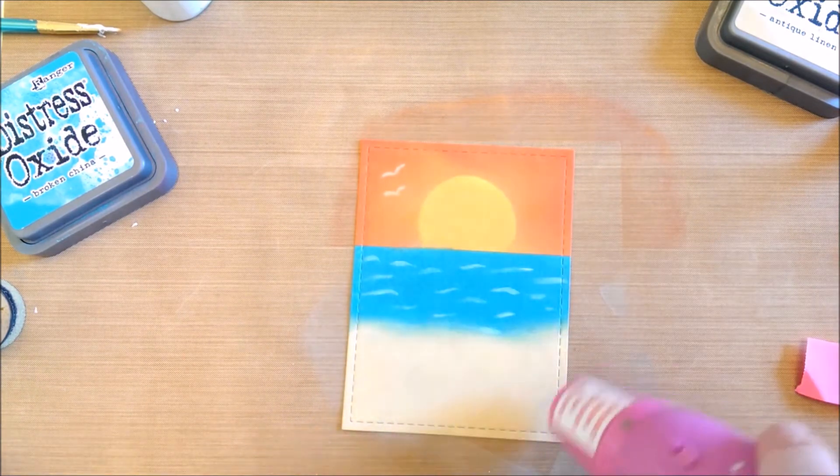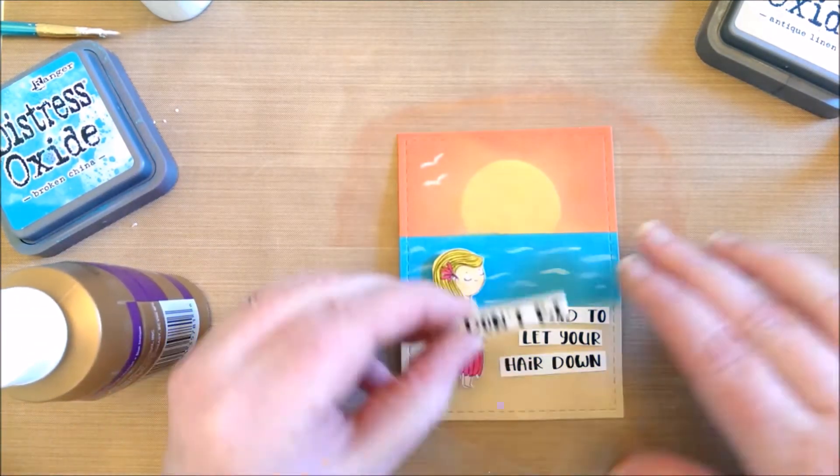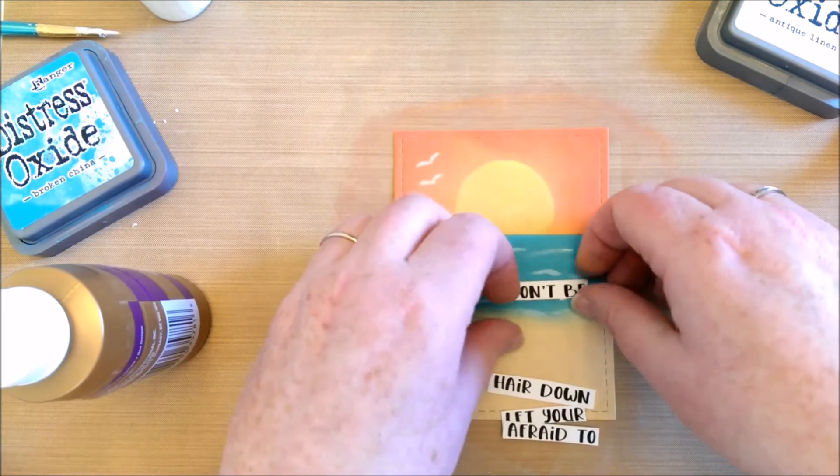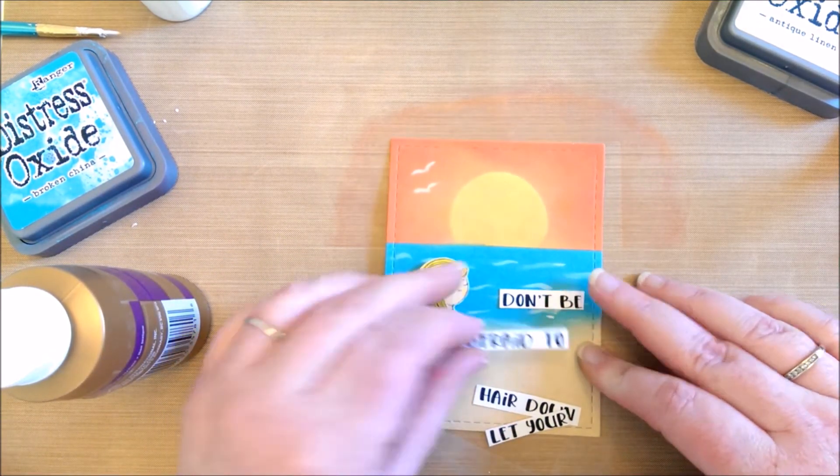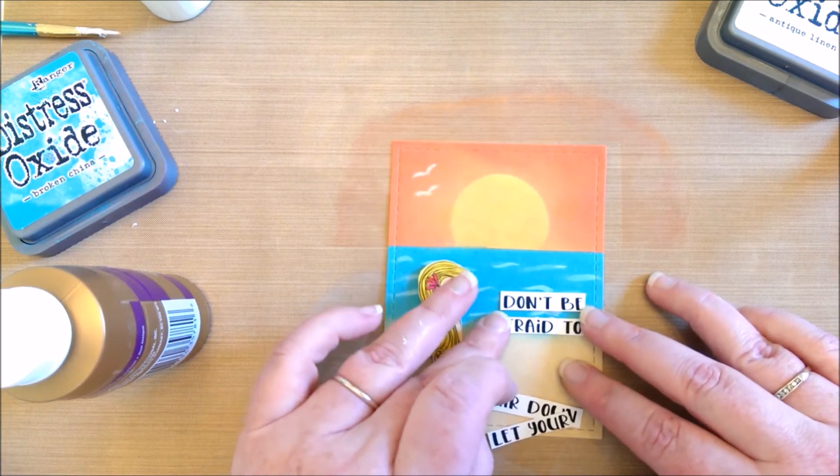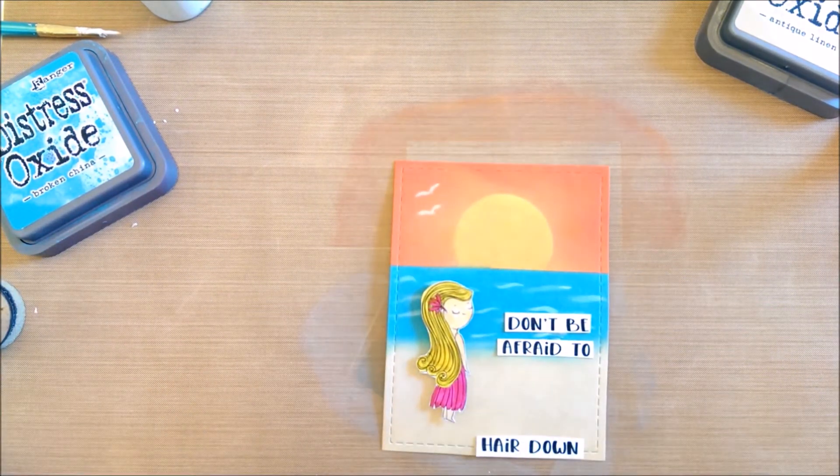I dried that with my heat tool. Then I added the girl that I colored with my watercolor markers, and then I cut up the sentiment and glued that down to the card.